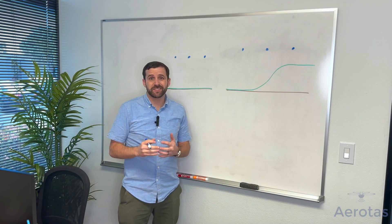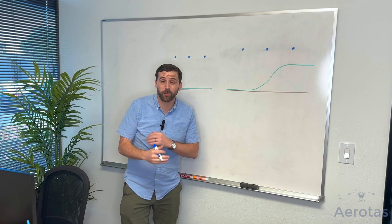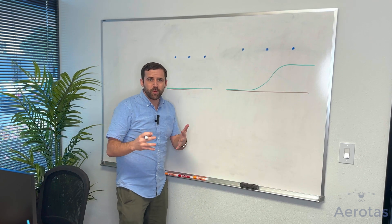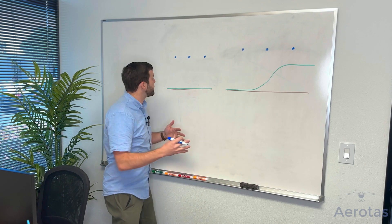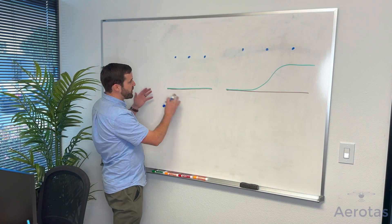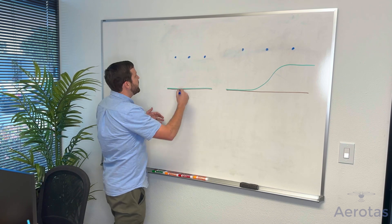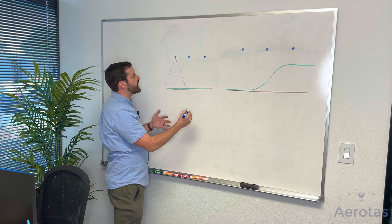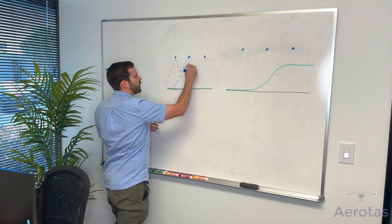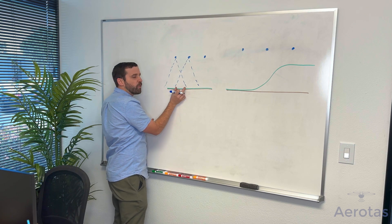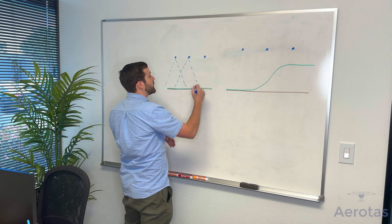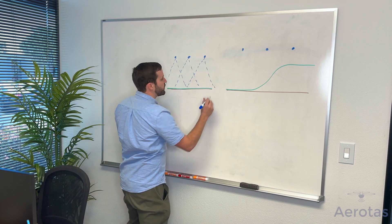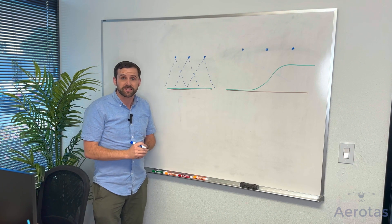The point of terrain awareness is to keep overlap consistent throughout an entire project site, which is really important for photogrammetry. On a typically flat project site, if you imagine this is the ground and this is where the photos are taken, each picture can cover a certain footprint of the ground. There is overlap from one photo to the next — this area of overlap is really important for photogrammetry to work properly, and that level of overlap is consistent throughout the entire site, which is what you need to keep accuracy consistent.